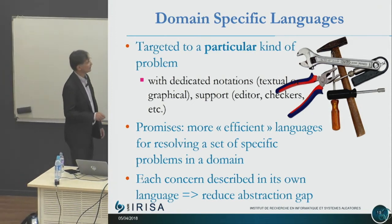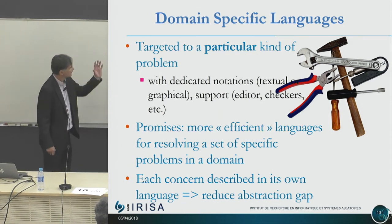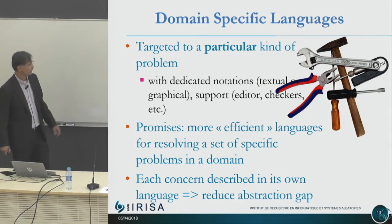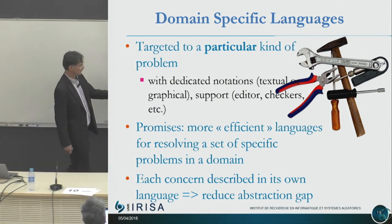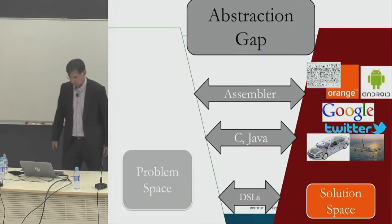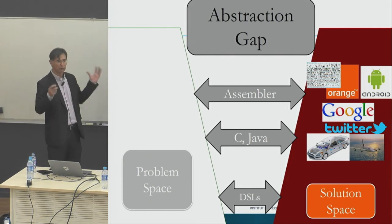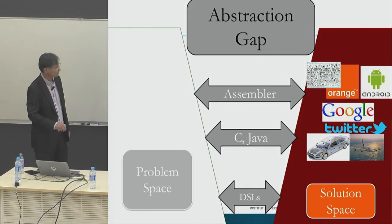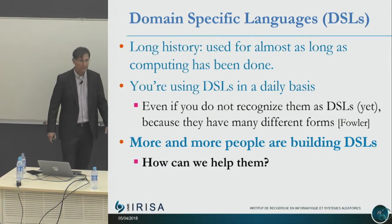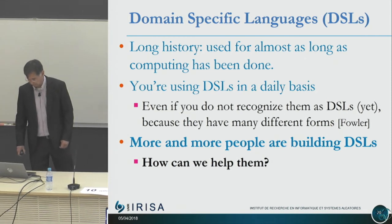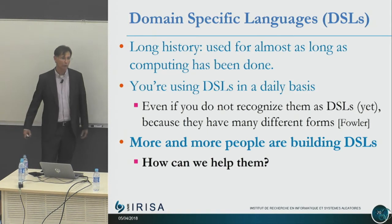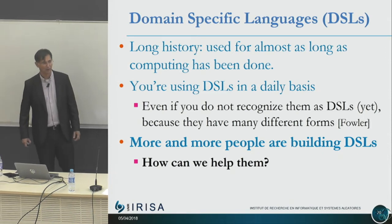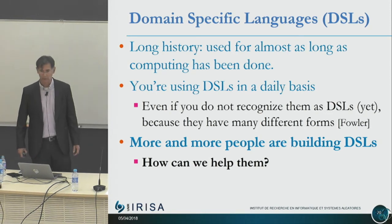A DSL is targeted to a particular kind of problem with a specific set of notations — textual, graphical — and promises more efficient languages for a specific set of problems in a domain. Each concern is described in its own language. The idea is to reduce the abstraction gap — the gap between the problem space, what the user wants, and the solution space, what is built. DSLs have a very long history, almost as long as computing. You are all using DSLs if you are doing any activity related to programming.